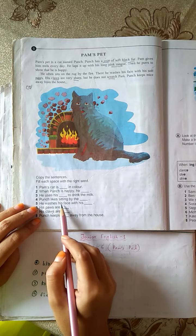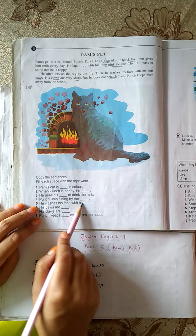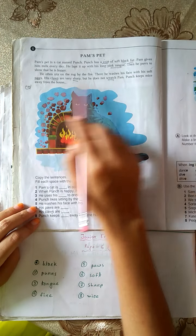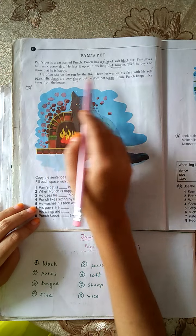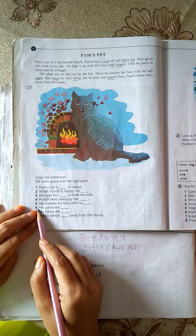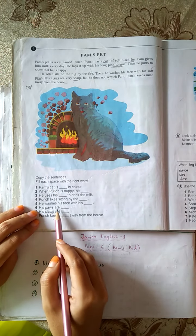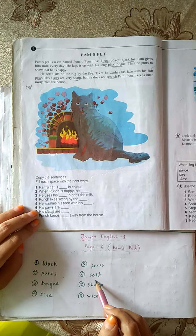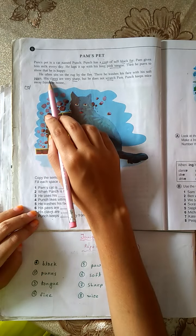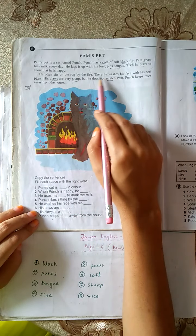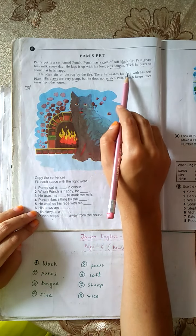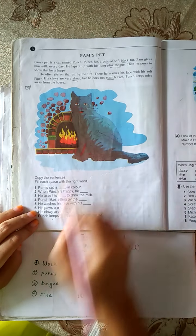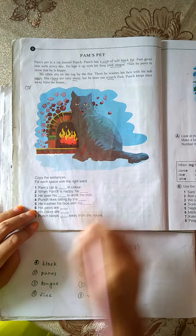5. He washes his face with his paws. Paws. 6. His paws are sharp. Soft. There he washes his face with his soft paws. Answer will be soft.